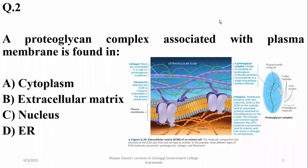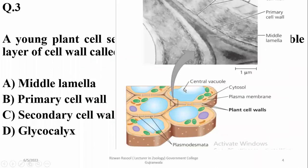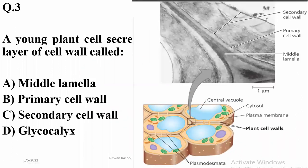Question 3: A young plant cell secretes a relatively thin and flexible layer of cell wall. Secondary cell wall is not found in younger plant cells, and glycocalyx is not part of the cell wall. Middle lamella is secreted later. The thin and flexible layer secreted in growing plant cells is the primary cell wall. Right option is B.